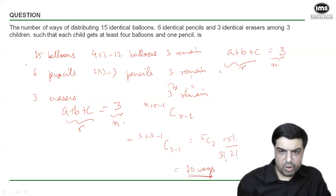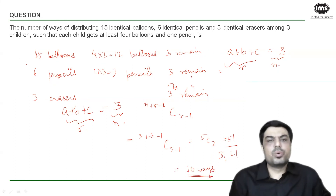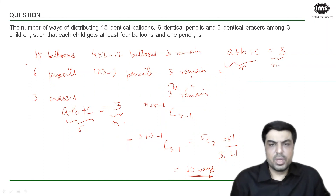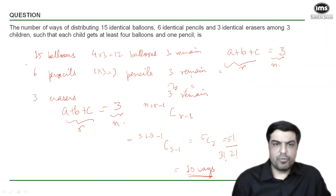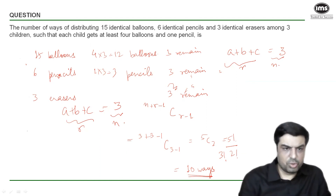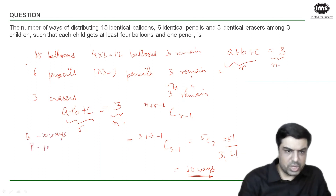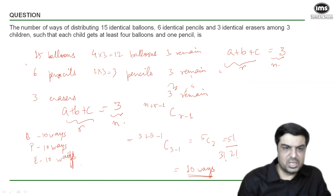As established earlier, the number of remaining articles for balloons, pencils, and erasers is the same — three each — so we don't need three separate equations. The number of ways to distribute each is 10. Therefore, balloons can be distributed in 10 ways, pencils in 10 ways, and erasers in 10 ways, giving a total of 10 × 10 × 10 = 1000.